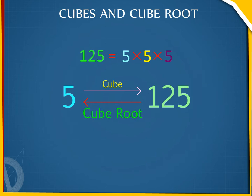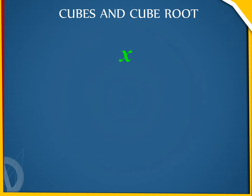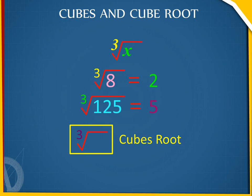The cube root of a number x is written as ∛x. Thus, ∛8 = 2 and ∛125 = 5. The symbol ∛ denotes cube root.